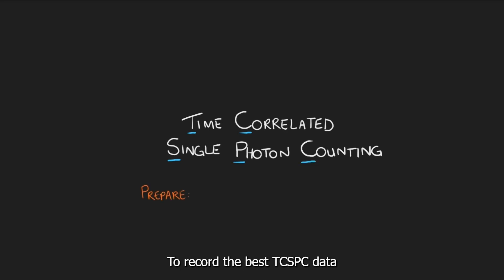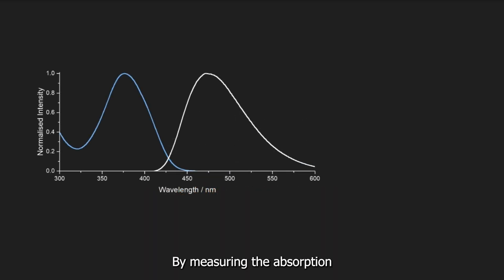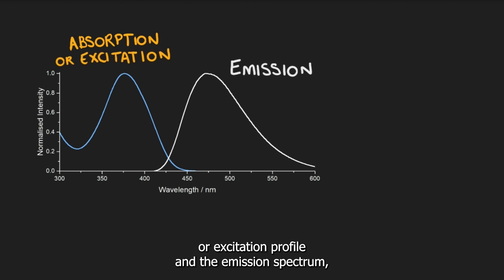To record the best TCSPC data, we first need a well-characterised sample. By measuring the absorption or excitation profile and the emission spectrum, we can decide which wavelengths to excite with and which wavelength to collect at.